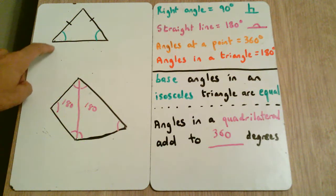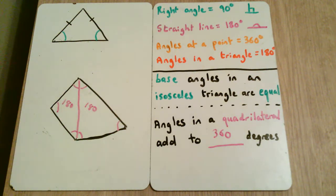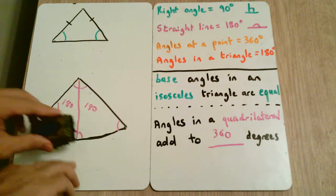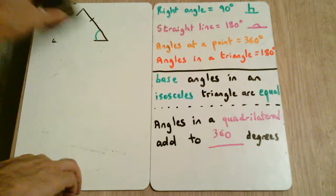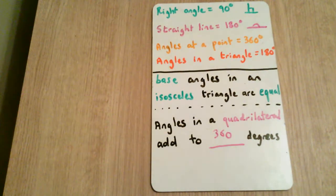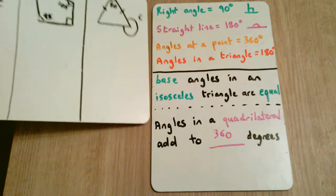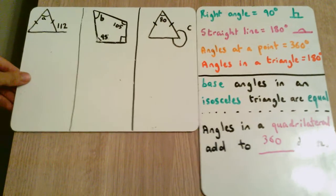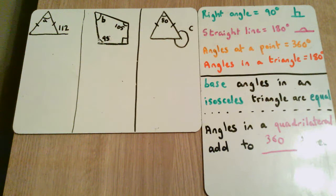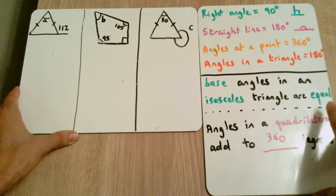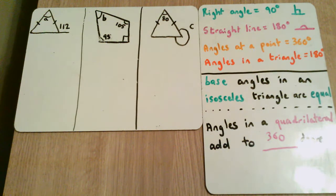That's our theory for today. The base angles in an isosceles triangle are equal, and the angles in a quadrilateral add to 360 degrees. We're now going to use all these different rules and tackle some different questions. We have an isosceles triangle, a quadrilateral, and a second isosceles triangle — we're going to tackle these step by step. First tip: fill in as many angles as possible to make this easier using the different rules.